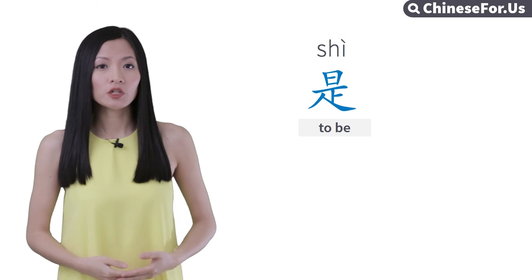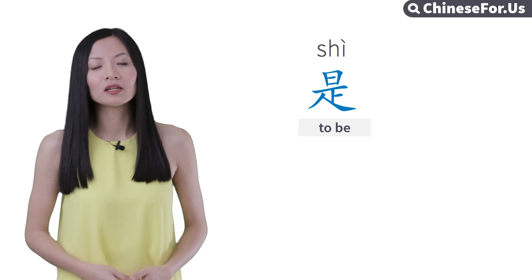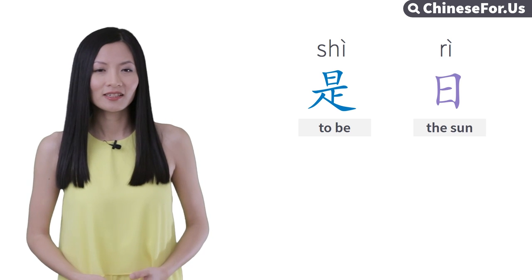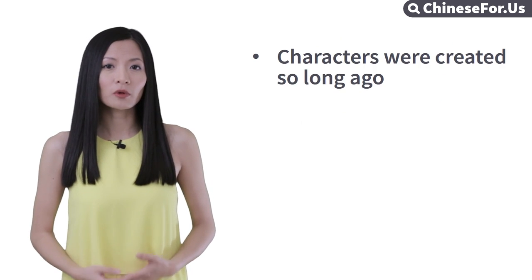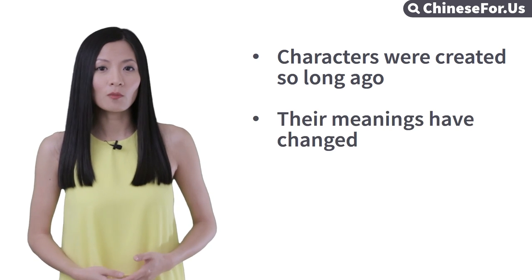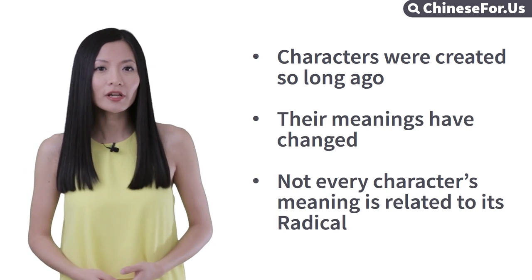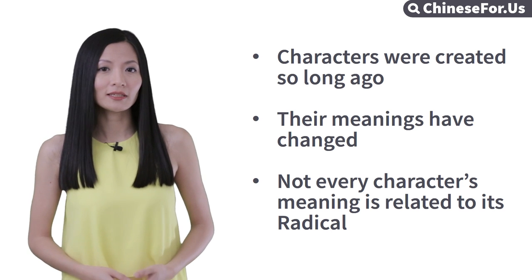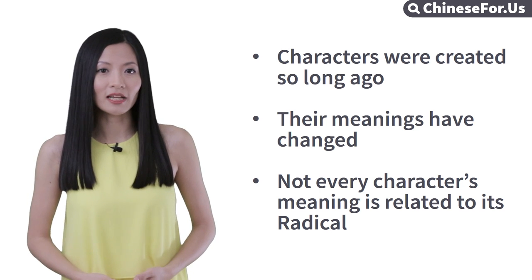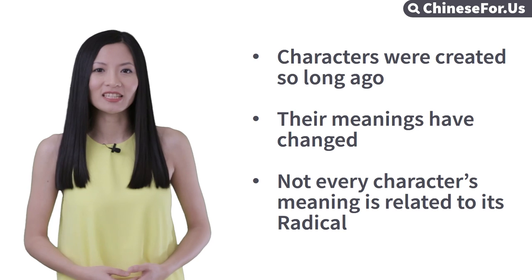You're probably wondering how 是 (shì), 'to be,' has anything to do with 日 (rì), the sun. It's because characters were created a very long time ago, and some of their meanings have changed. So not every character's meaning is related to its radicals anymore.